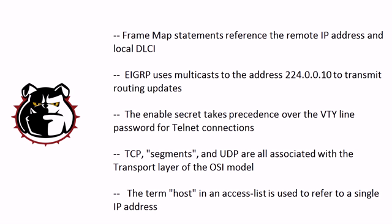First: frame map statements reference the remote IP address and local DLCI. Second: EIGRP uses multicast to the address 224.0.0.10 to transmit routing updates. Third: the enable secret takes precedence over the VTY line password for Telnet connections. Fourth: TCP segments and UDP are all associated with the transport layer of the OSI model. And finally: the term 'host' in an ACL is used to refer to a single IP address.